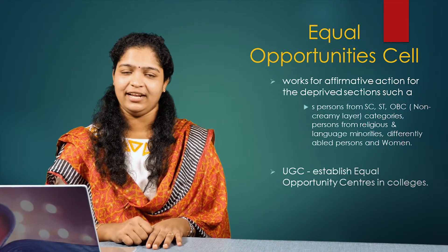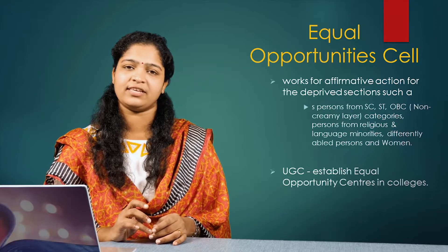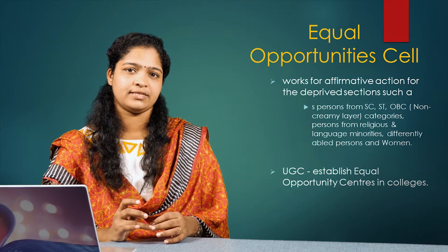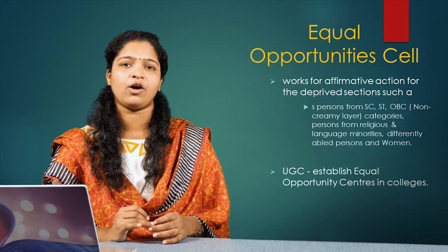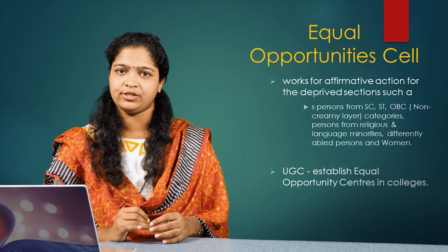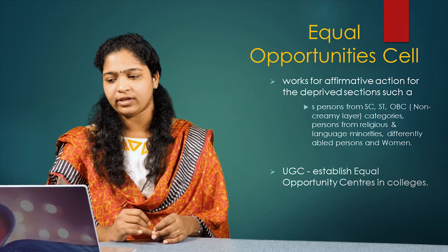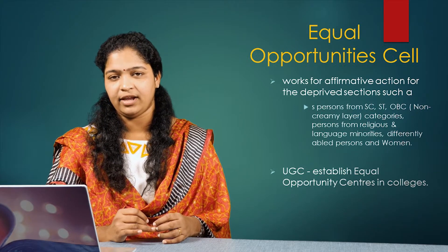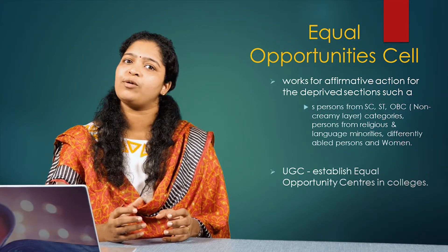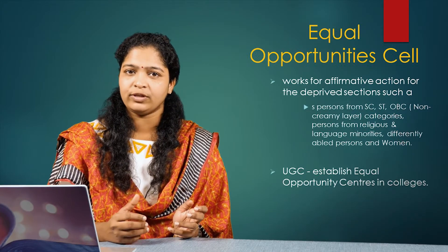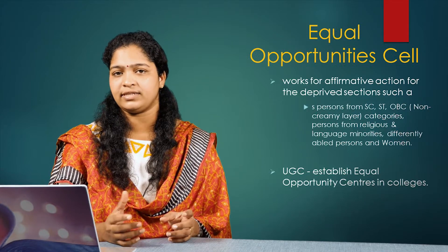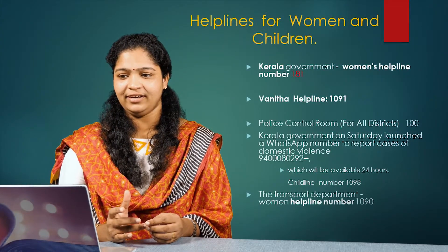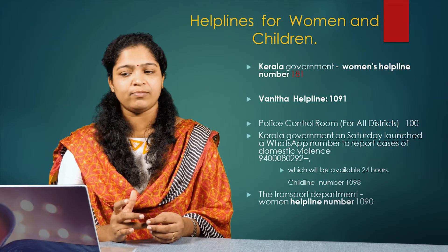Next comes the equal opportunity cell. This is a suggestion given by the UGC, the University Grants Commission, and is constituted in every college. It addresses issues related to SC, ST, OBC, non-premium layer persons, people from different religious or language minorities, differently-abled persons, and women. The main objective of this equal opportunity cell is to work for affirmative action for the deprived sections of the community in educational institutions.